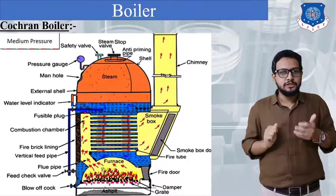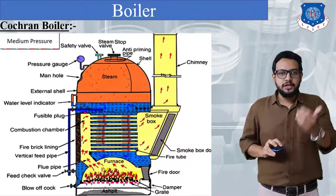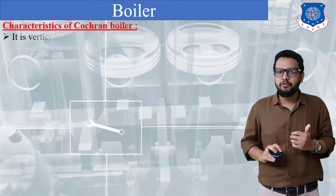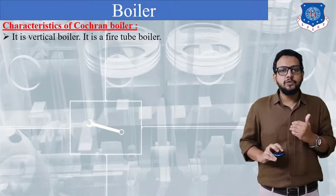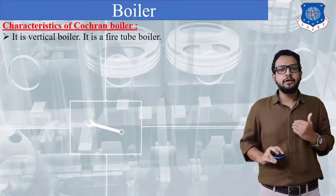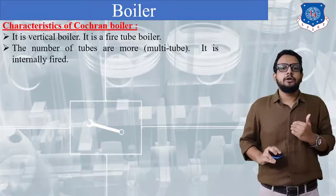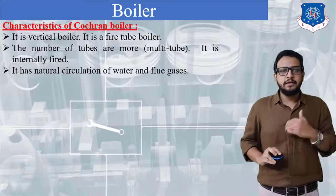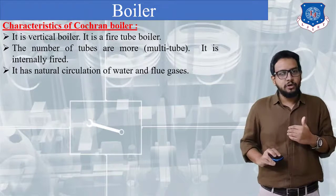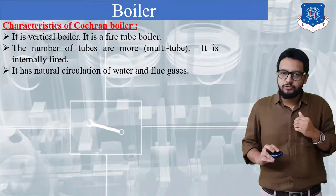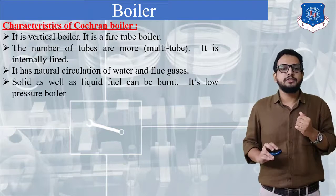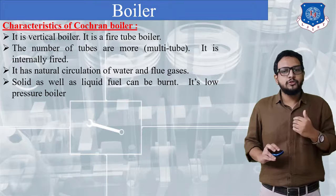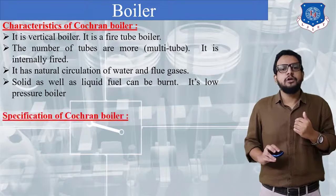So this is the working of this boiler. Now let us see the written notes. The characteristics are: it is a vertical boiler and a fire tube boiler; the number of tubes are more which means it is a multi-fire-tube boiler; it is an internally fired boiler; it has natural circulation of water and flue gases; solid as well as liquid fuel can be burnt. It is a medium pressure boiler.